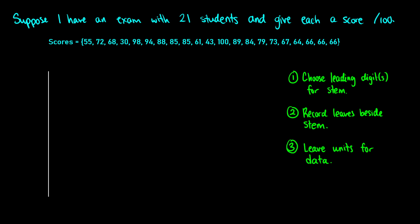First, I need to choose the leading digits for the stem. We're going to split all of these scores into two components. We'll have a row for the 10s, 20s, 30s, 40s, 50s, 60s, and so on. On the right side of this display, we'll have the ones column — single digits like 5, 2, 3. Over here, we'd have your 10s and 100s. Our highest score is 100, so I put that at the top of the chart. I put a 10 on the left side — that's the stem. The stem is on the left and the leaf is on the right. So 10 means 1 is my 100 and 0 is my 10s, and then I put a 0 to the right as my leaf.